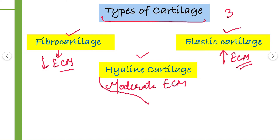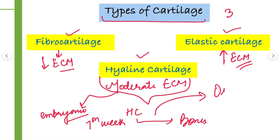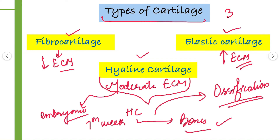In the embryonic stage, bones are not present — only hyaline cartilage is present. After the 7th week, this hyaline cartilage gets converted into bones by the process of ossification. With the help of ossification, the hyaline cartilage present in the embryo gets converted into bones.